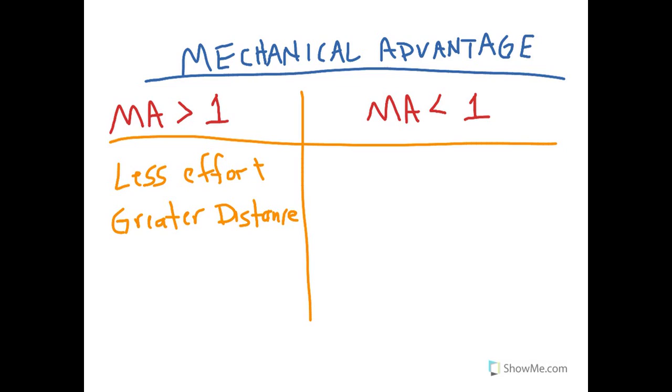If the mechanical advantage is less than one, it's going to require more effort. But the distance that you're traveling is going to be less. So, greater than one, less effort, greater distance. Mechanical advantage is less than one, more effort, less distance.